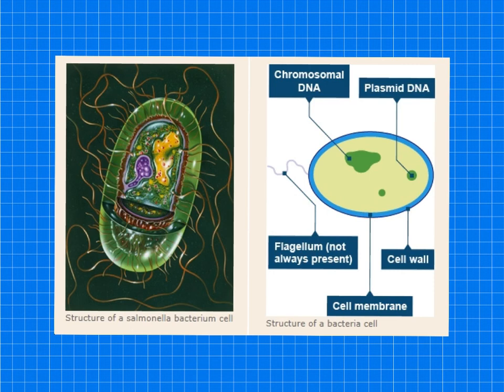Here we see a diagram of a bacterial cell. Bacterial cells are much smaller than plant or animal cells. They have a cytoplasm and cell membrane surrounded by a cell wall. The genetic material, as you can see, is not enclosed in a nucleus. It is a single DNA loop and there may be one or more small rings of DNA called plasmids.